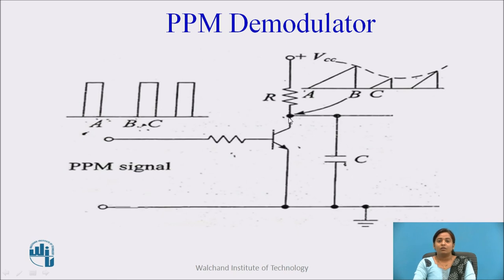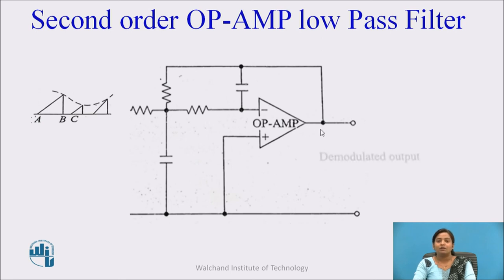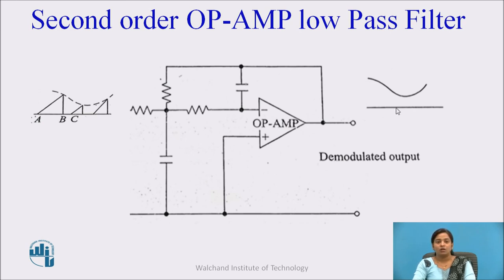In this way, the waveform at the collector of the transistor is a sawtooth wave whose envelope is proportional to the modulating or original signal, so the information is contained in the envelope. When this sawtooth wave is applied to the low-pass filter, the op-amp circuit removes the higher frequencies and passes all lower frequencies, and we get the desired demodulated signal at the output. In this way, the PPM signal is demodulated into the original signal or original information.